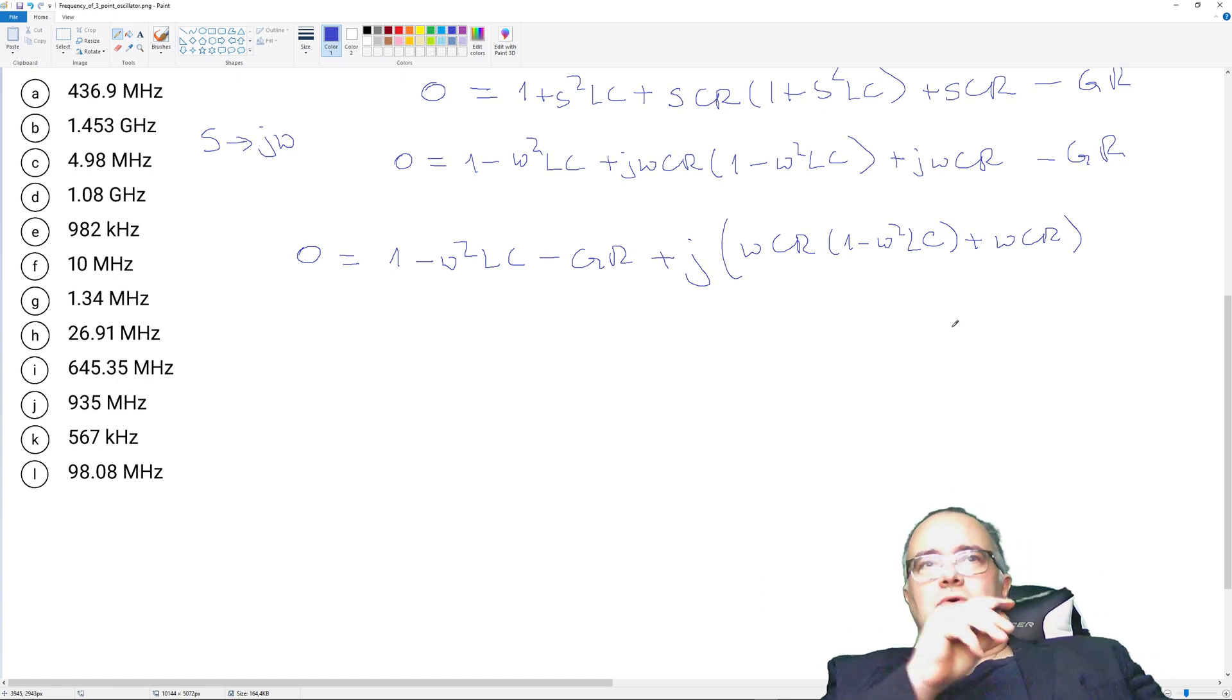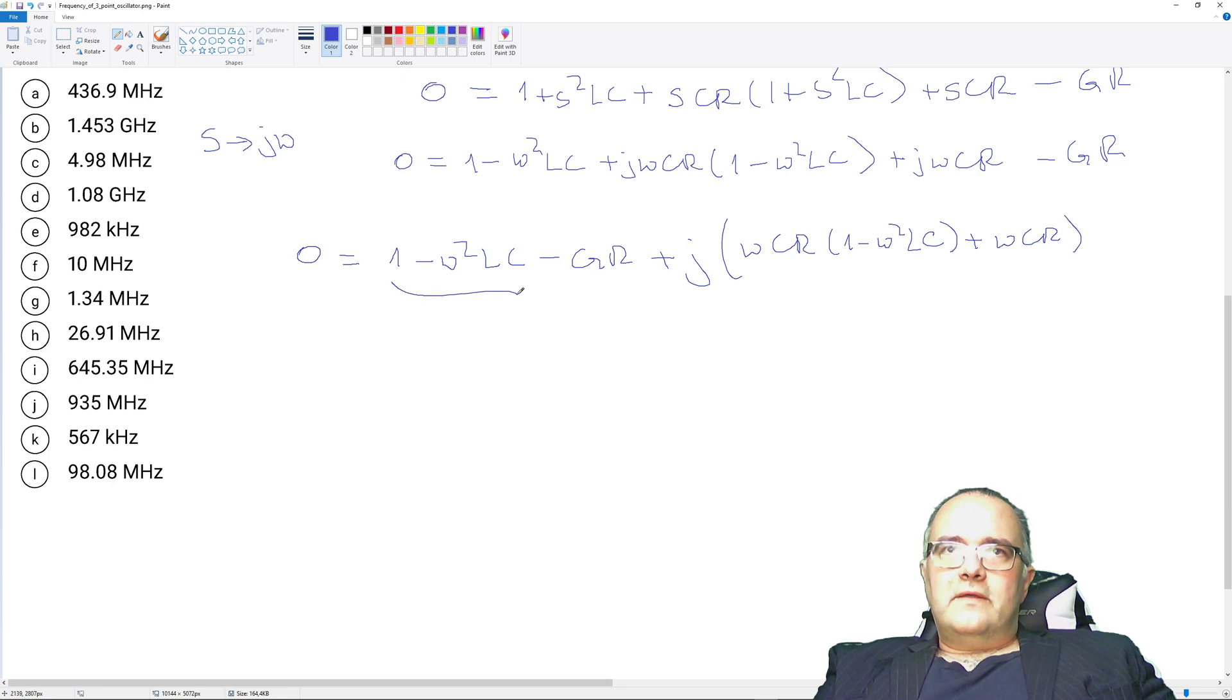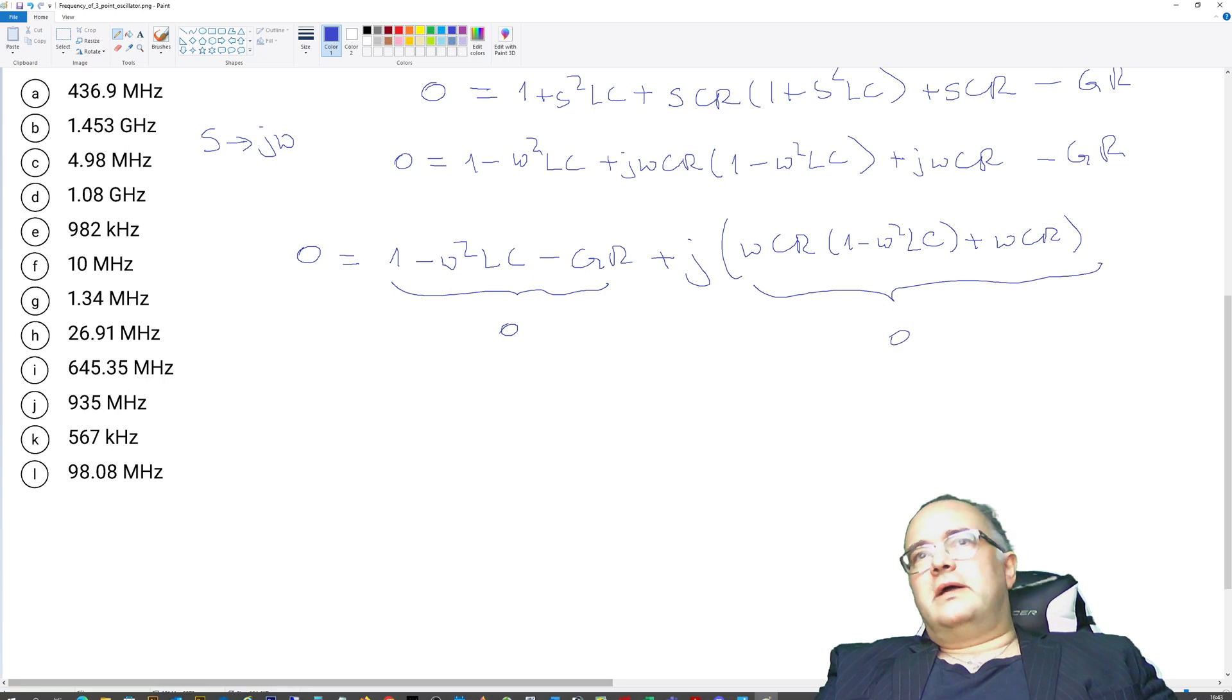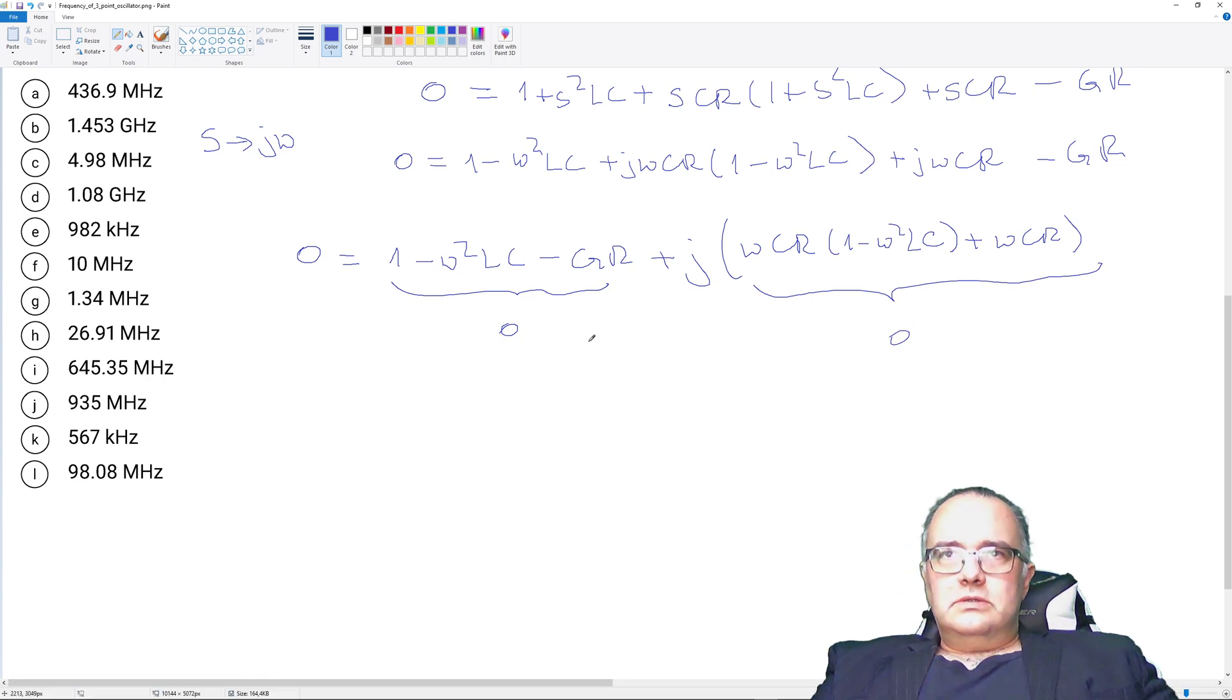Now the frequency. So this here is assumed to be at the frequency of oscillation. And for this to be equal zero and this part imaginary is zero. And if we equate this to zero will get the frequency of oscillation. ω₀CR 1 minus ω₀ square LC plus ω₀CR equal zero.